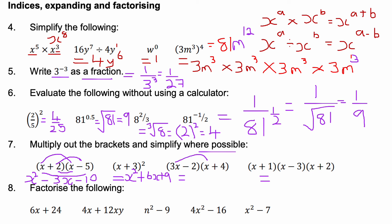For (3x − 2)(x + 4): 3x times x is 3x squared; 3x times 4 is 12x; minus 2 times x is minus 2x, giving plus 10x combined; and minus 2 times positive 4 is minus 8. So the answer is 3x squared plus 10x minus 8.